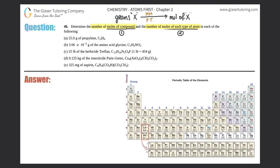We did tons of molar mass problems — how to find a molar mass starts around question 42, so if you have the playlist you can go back if you're not comfortable finding molar masses. Once we have the overall moles of the compound, we can find the moles of the individual parts — the specific types of atoms.